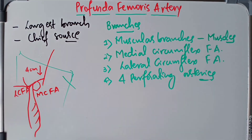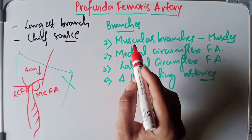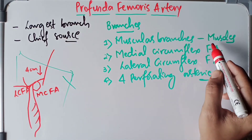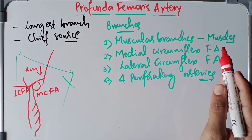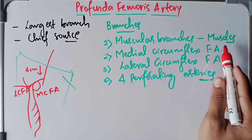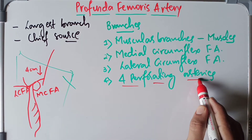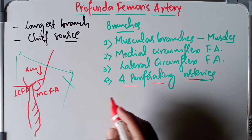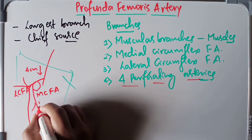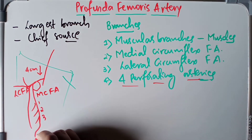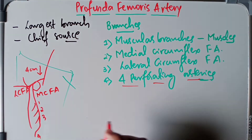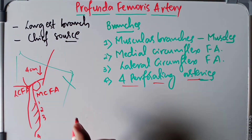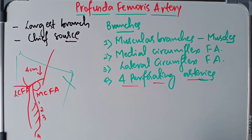The muscular branches supply the muscles of the compartments of the thigh. The four perforating arteries are numbered one, two, three, and the fourth one is the continuation of the profunda femoris artery itself.